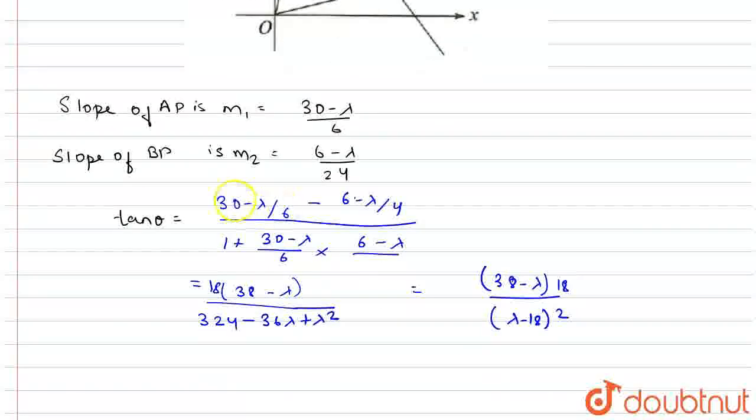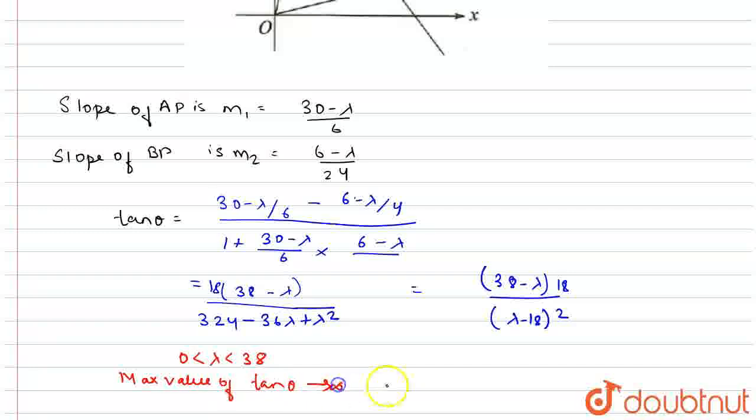From here it is clearly seen that 0 is less than lambda less than 38. So, maximum value of tan theta tends to infinity for lambda equals 18.